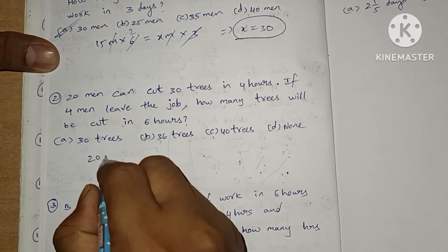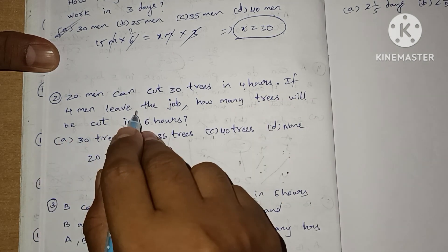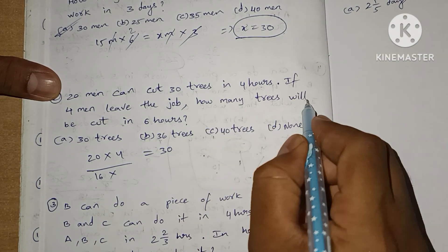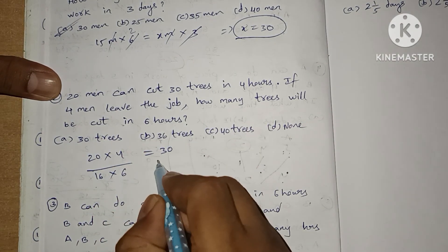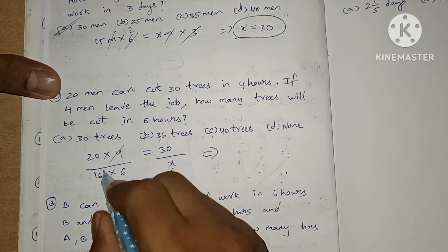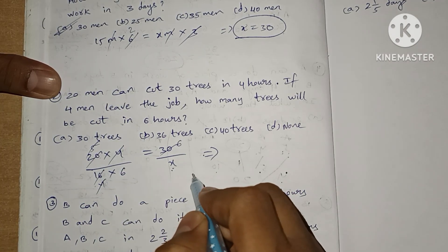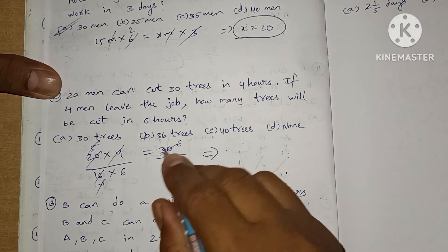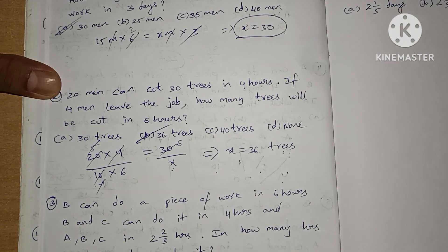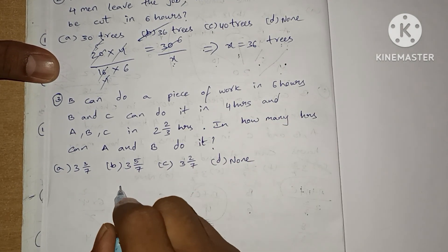Question 2: 20 men can cut 30 trees in 4 hours. If 4 men leave the job, leaving 16 men, how many trees will be cut in 6 hours? Using proportionality: (20×4)/30 = (16×6)/X, so X = (16×6×30)/(20×4) = 2880/80 = 36 trees. The answer is option B, 36 trees.